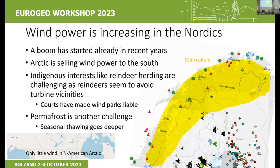The Sámi indigenous peoples' area is shown in yellow. In Norway especially, wind farms are very active in these areas, but reindeer herding is the main business for Sámi communities, and it has been demonstrated in court that wind parks keep reindeer away. In North America, permafrost is a particularly significant problem for wind power construction — modern wind turbines are very heavy, and building on thawing permafrost poses significant risks even within a 20-year operational lifespan.